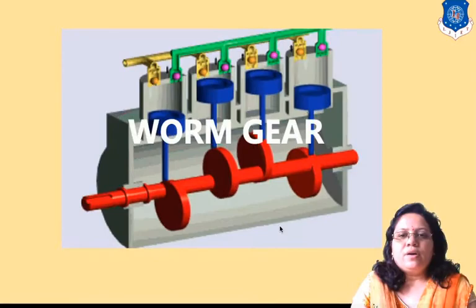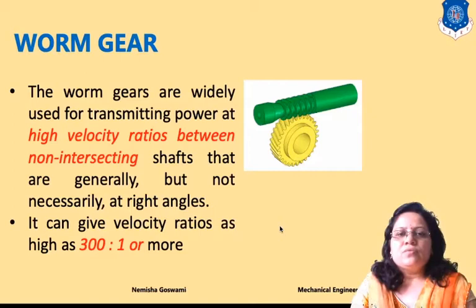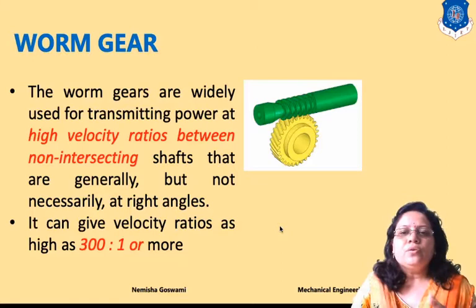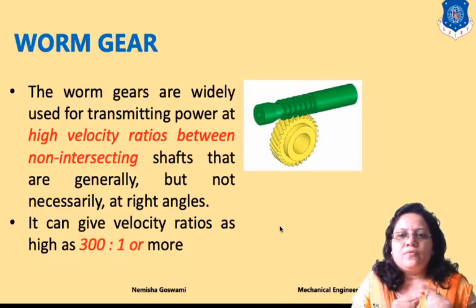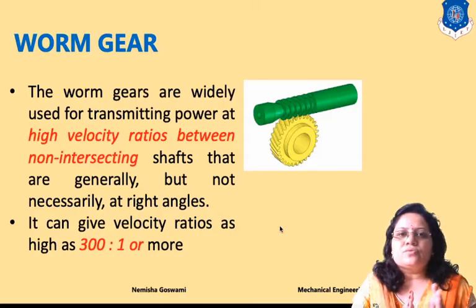Hello, myself Nemesha Goswami. Welcome to this lecture on worm gear. First, we will discuss basic terminology used in worm gear. Worm and worm gear are used for transmission of power at very high velocity ratio between two non-intersecting shafts. The velocity ratio is very high — 300:1 or it may be increased beyond this limit.